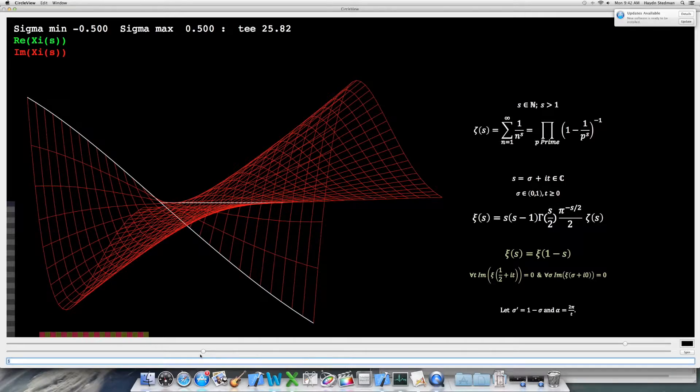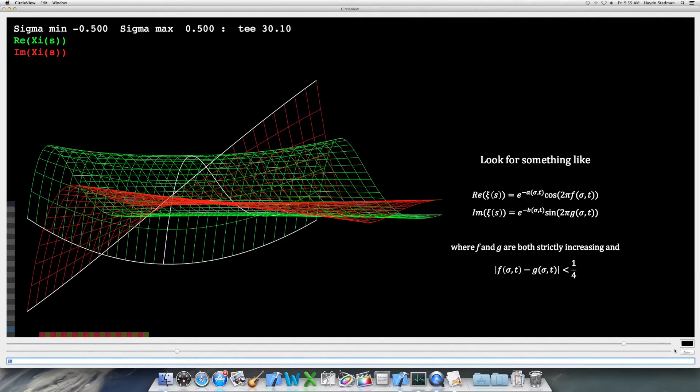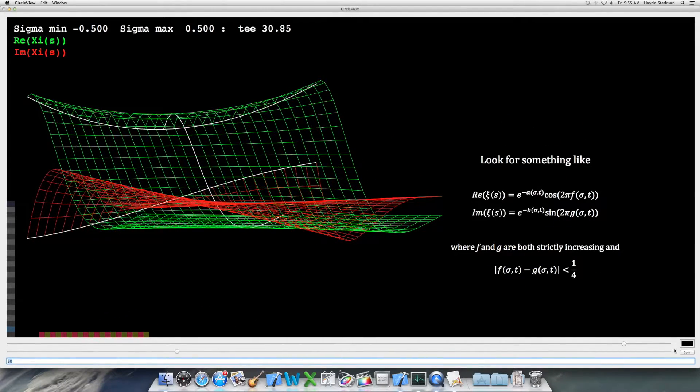The real surface swims like a dolphin. The imaginary swims like a person. We see both together.